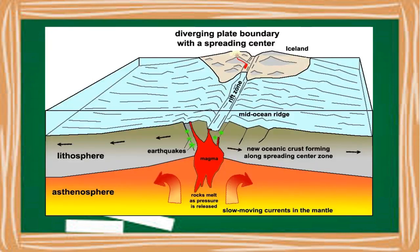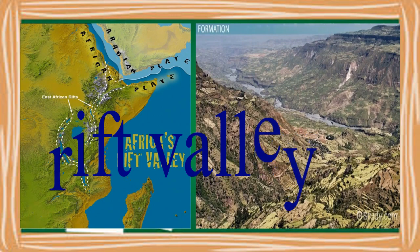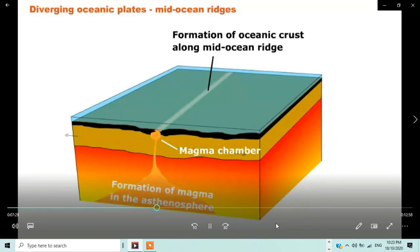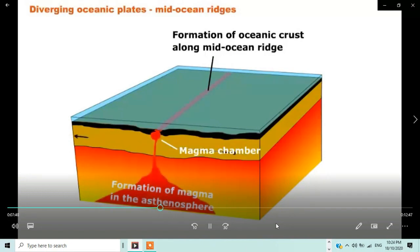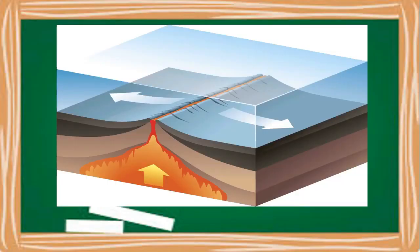The magma solidifies to create new oceanic crust. In plate tectonics, a divergent boundary is a linear feature that exists between two tectonic plates moving away from each other. Divergent boundaries within continents initially produce rifts, which eventually become rift valleys. The formation of rift valleys and oceanic ridges are indications that the crust is spreading or splitting apart. Most divergent boundaries are situated along underwater mountain ranges called oceanic ridges.